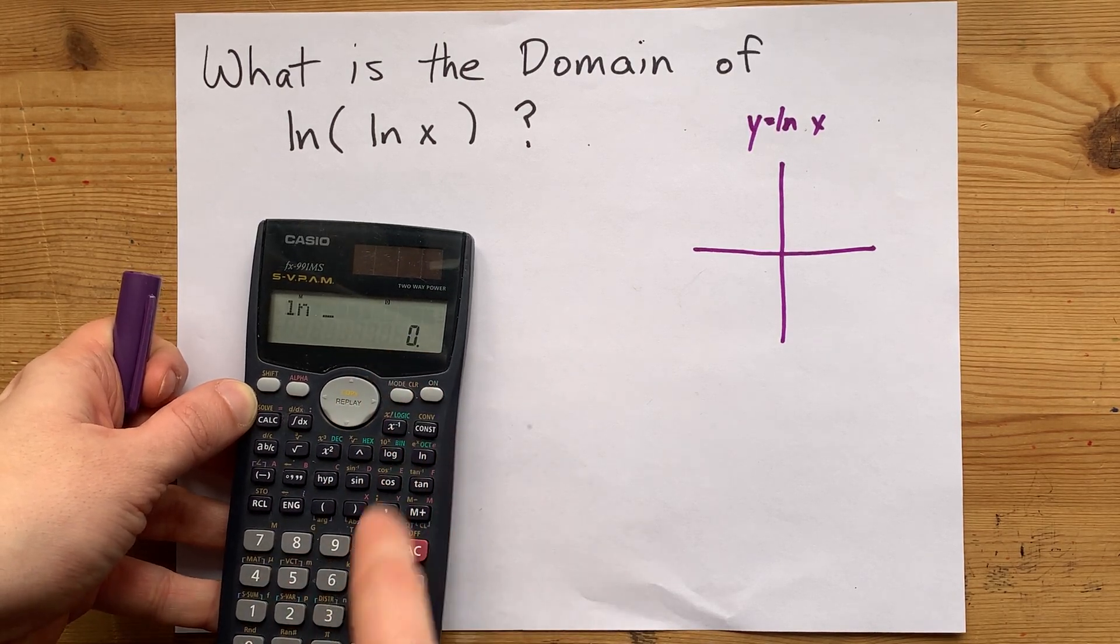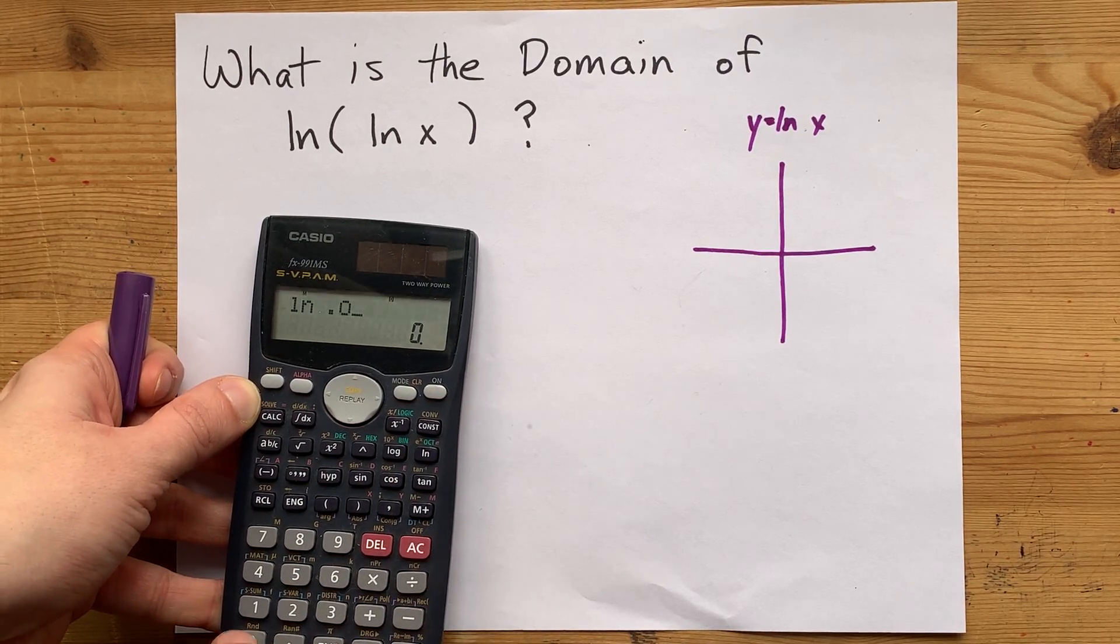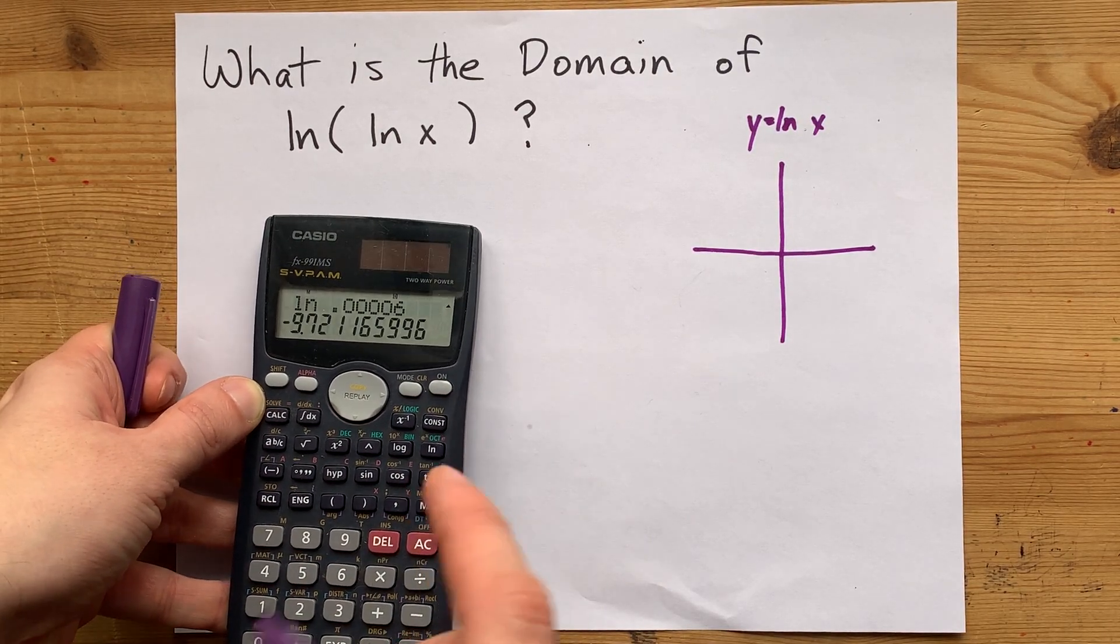In fact, if you try the ln of 0, you also get an error. But the ln of any positive number, no matter how small, does exist.